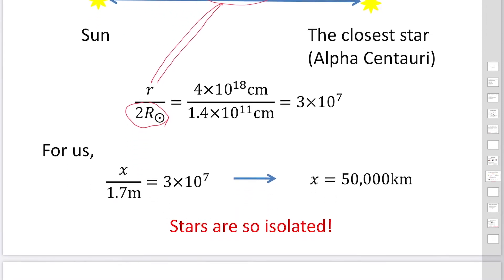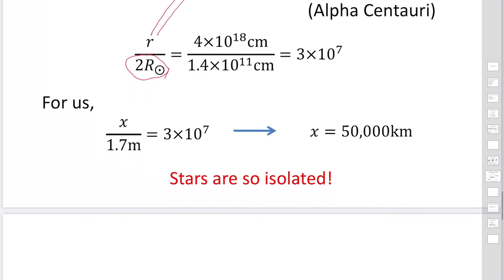If you consider this in our case, x is the distance to your neighbor and your height, I assume 1.7 meters. Then how far is your neighbor? Actually, they live 50,000 kilometers away. If you consider the circumference of the earth is 40,000 kilometers, your neighbor cannot live on the earth.